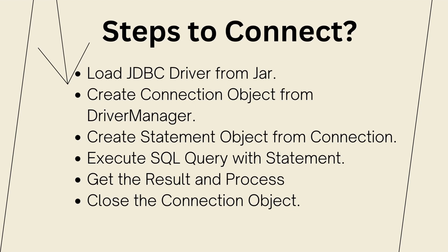The first step is to load the JDBC driver from the jar. Every database has its own driver in a separate jar file containing the main driver class and helper classes. To load a particular class into memory, we use the Class.forName() method, which loads the desired driver class using reflection. Once the class is loaded, we use DriverManager's getConnection() method to create a connection object, which allows the application and database to communicate with each other.